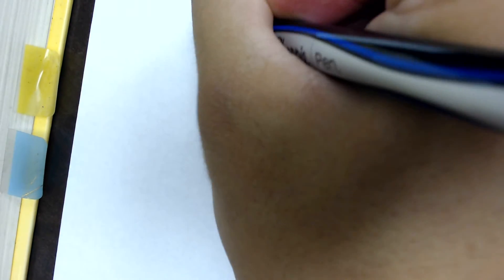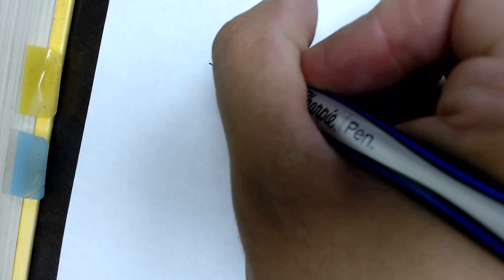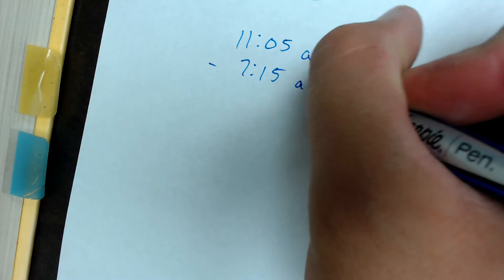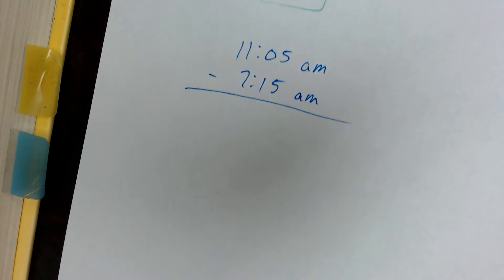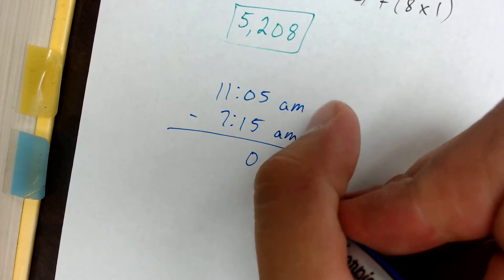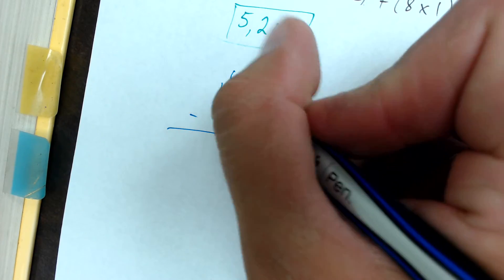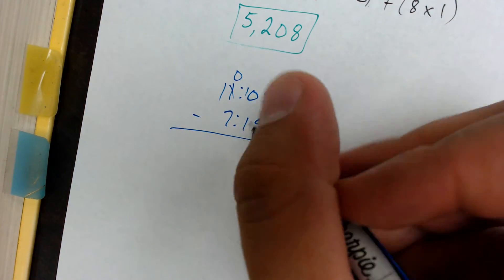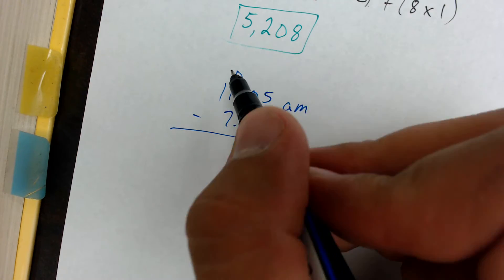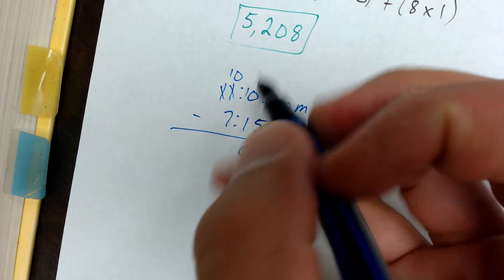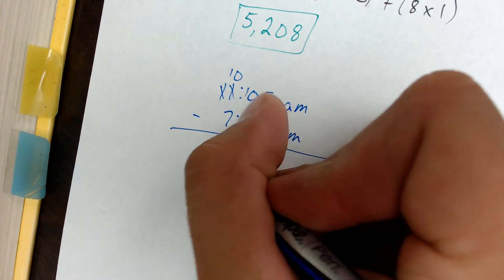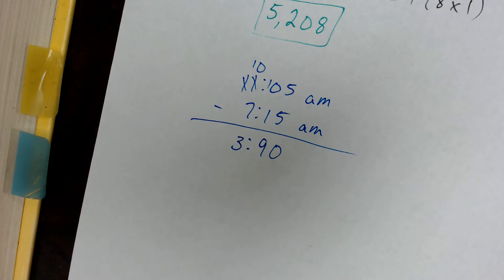We've got the time of 11:05 a.m., so it's in the morning. And then we're subtracting 7:15 a.m., also in the morning. So with our algorithm, we'll go ahead and subtract here. Five minus five gives us zero. We have to regroup this one. Bring it over. Ten minus one is equal to nine. And then from there, we have to regroup this one. Make that a ten. Ten minus seven gives me three. So it took him three hours and 90 minutes.